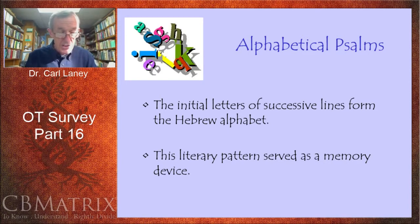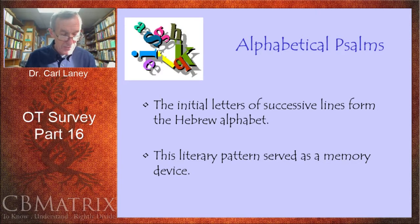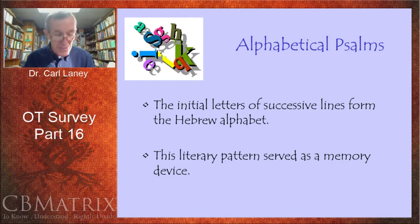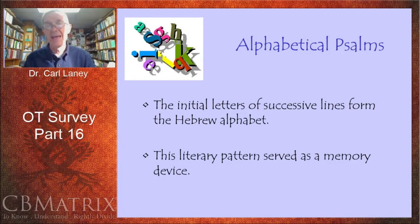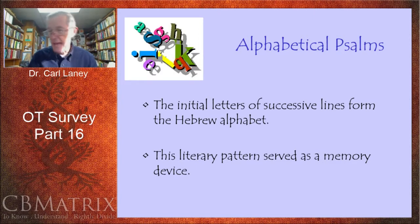In Psalm 119, just before the first line, you see the word Aleph. Then it says, 'How blessed are those whose way is blameless.' That word Aleph is the first letter of the Hebrew alphabet — it corresponds to our A. Down between verse 8 and verse 9, you'll see the word Beit, which corresponds to B. All lines from verse 1 to verse 8 begin with Aleph, and all lines from verse 9 through verse 16 begin with Beit. You can see the pattern that follows the letters of the Hebrew alphabet.